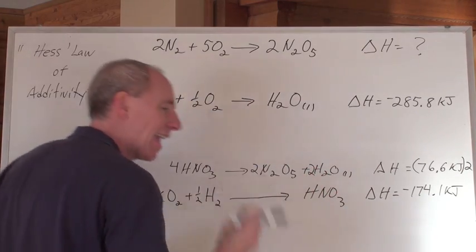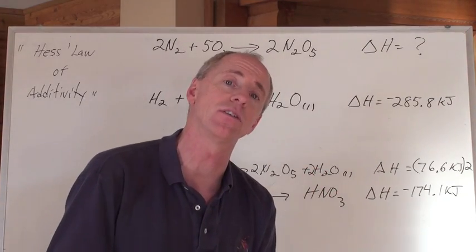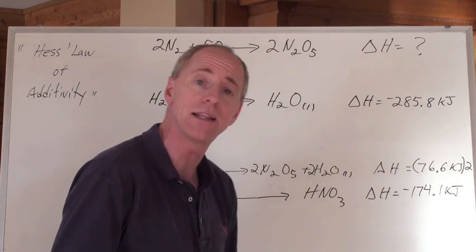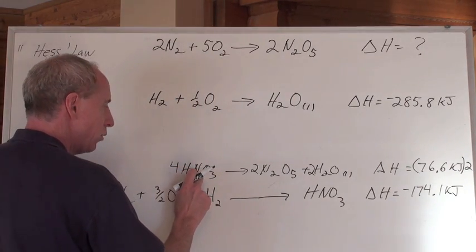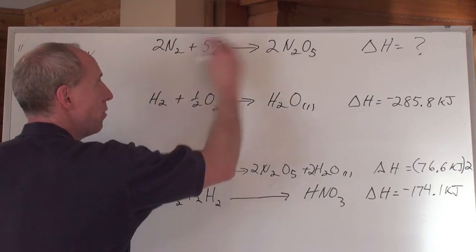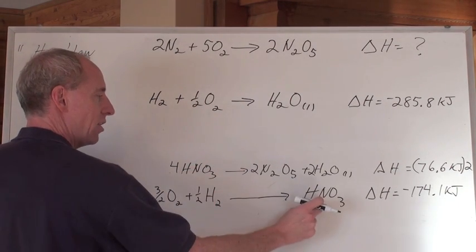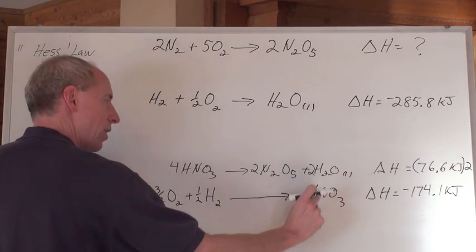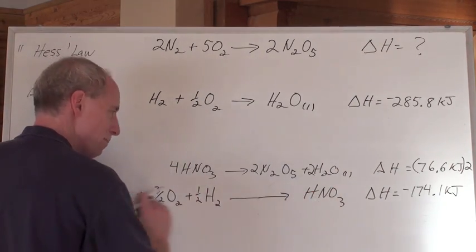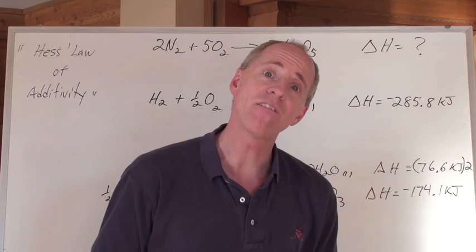Well, what do I got to do with these now to cancel out the compounds to leave me with the elements that are going to be able to make this? First things first. I've got four HNO3s here and I don't want them in the net equation, so they've got to cancel. I've got HNO3s over here. But they're in the quantity of four here and I can't touch this equation, quantity of one here.